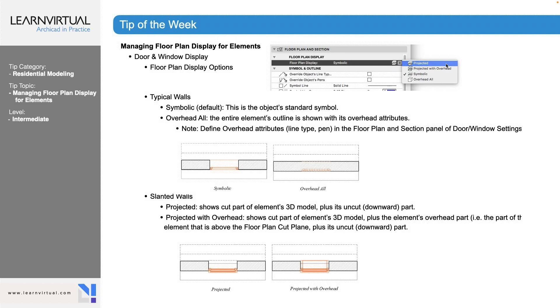We also have slanted walls, which shows part of the cut of the element's 3D model with a downward part cut, and can also show an overhead cut depending on what you selected.